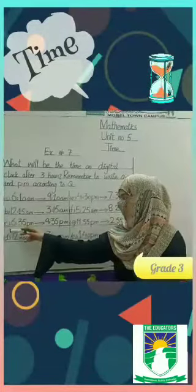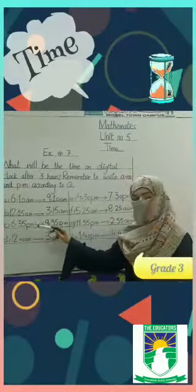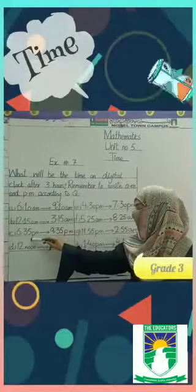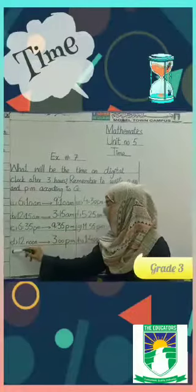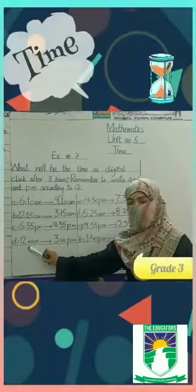Question number C is 6:35 pm. 6 converts to 9, 35 minutes as it is. The question is in pm, so we write pm. Question number D is 12 noon.